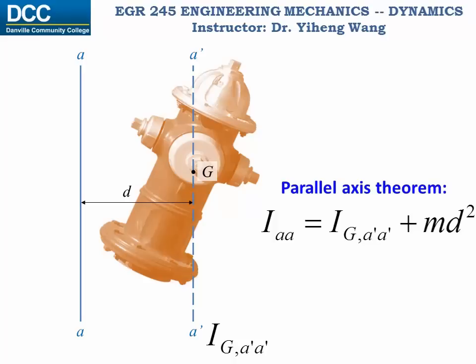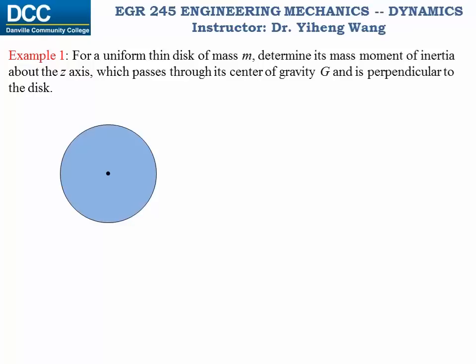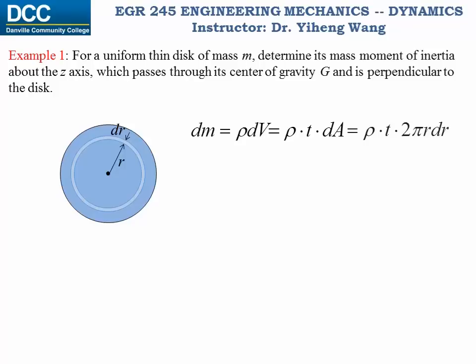Let's look at this example. For a uniform thin disk of mass m, we need to determine its mass moment of inertia about the z-axis which passes through its center of gravity G, perpendicular to the disk. We pick our differential element to be a ring located at radius r with width dr. Its mass dm equals rho times its volume dV, and dV equals the area dA times the thickness t of the disk. The area of the ring equals its circumference times width dr, which is 2πr·dr. The mass moment of inertia about the z-axis is the integration of r squared dm.